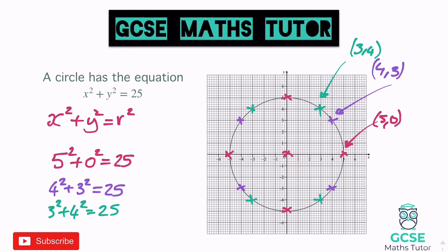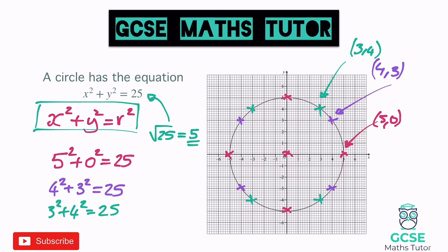What you need to remember is x squared plus y squared equals the radius squared. Likewise, if we are trying to find the radius of the circle and we have the equation but no diagram, we would just do the square root of 25, which gives us our radius of 5. This is very specific to circles with centre (0, 0), or at the origin, which is what we're going to be looking at unless it explicitly says the centre is somewhere else.